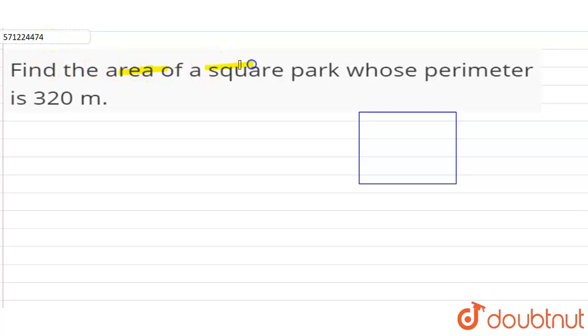So it is given that the perimeter of this square is 320 meters, and we have to find the area of the square.